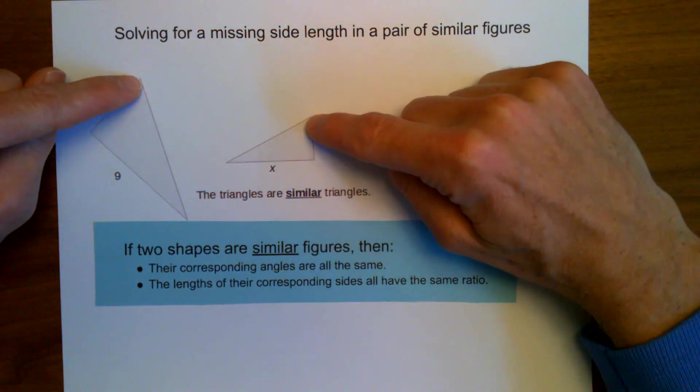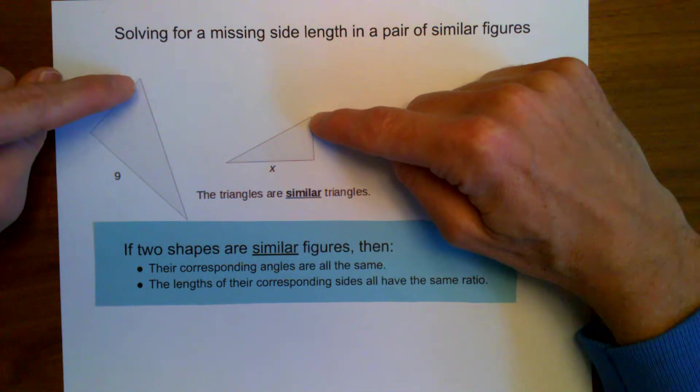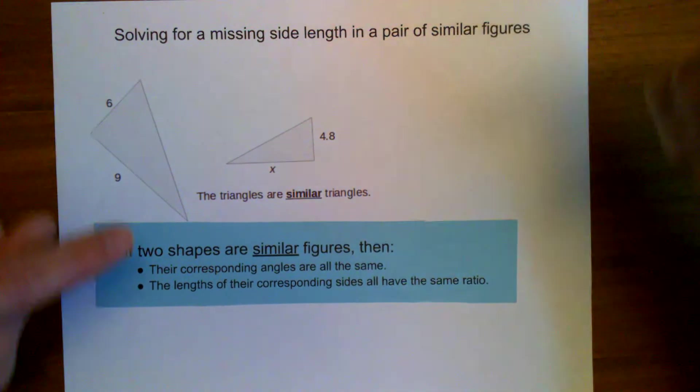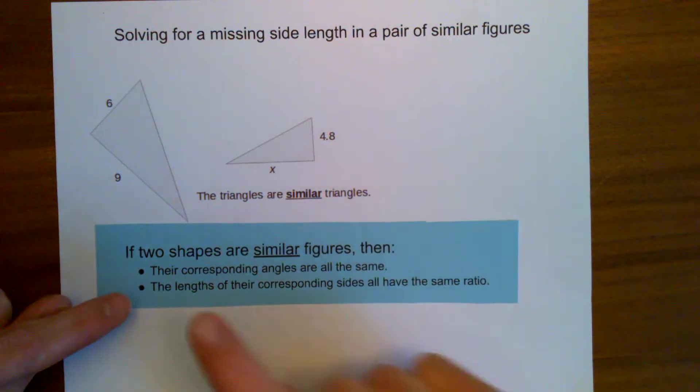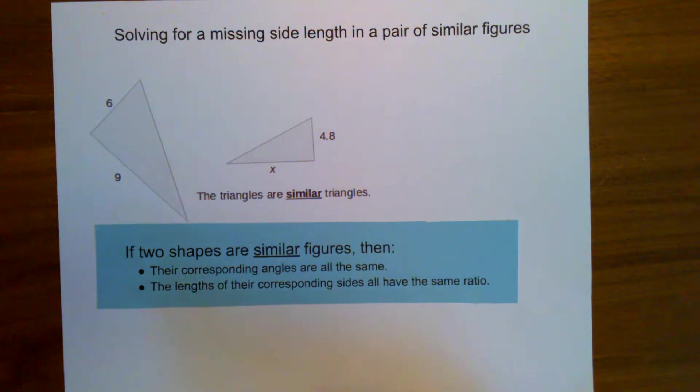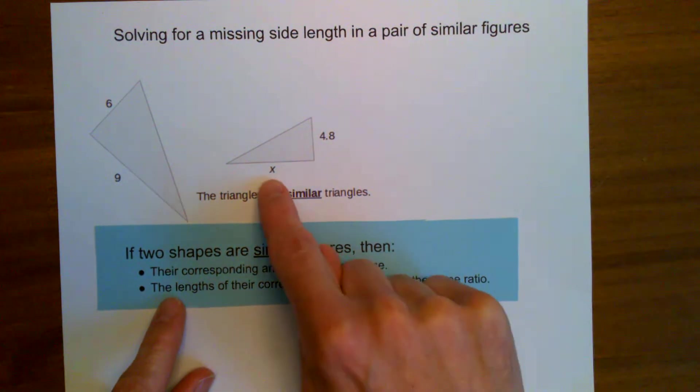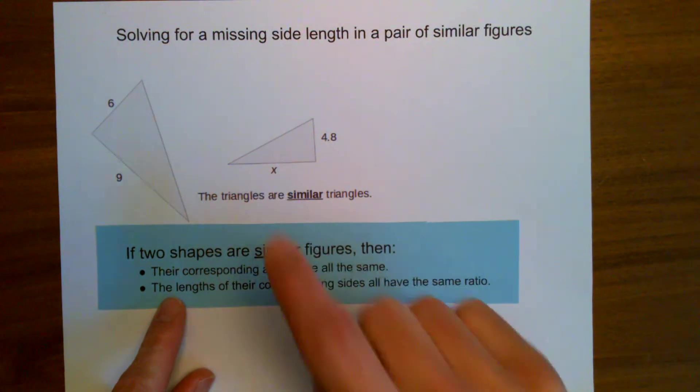If these two angles match up between the two triangles, the measure of this angle is going to be the same as the measure of this angle. The corresponding angles are the same, and then this one is a little trickier. The lengths of the corresponding sides all have the same ratio. We'll have to dig into that one. That's the one that we're going to use to figure out the measure of the length of side x here.